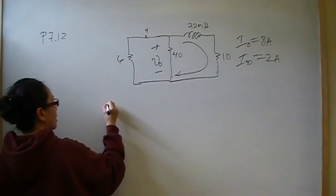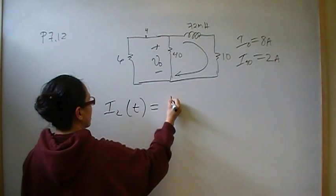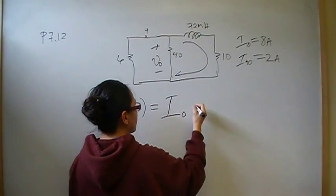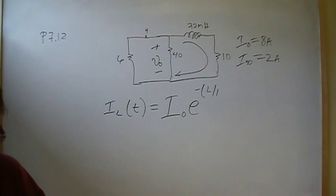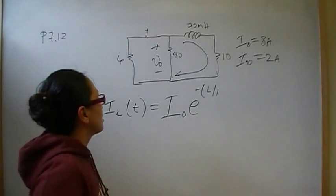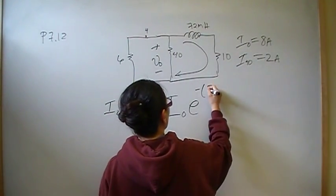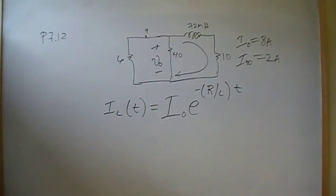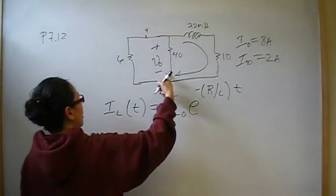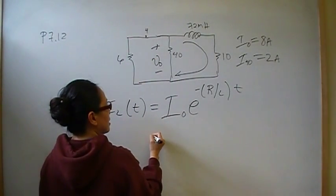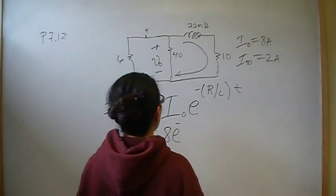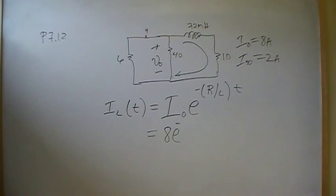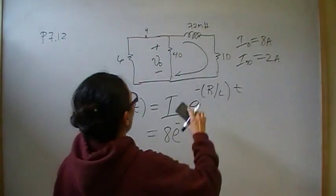So the inductor current then is I-L of T. That's going to be the initial current through the inductor times E raised to the negative R over L times T. So that's a general equation for inductor current, and we need it because we need to figure out how it splits. So we know this initial current through the inductor is 8, right? So we've got 8E to the minus R. Well, what is that R? We have a whole bunch of resistors, and the R is going to be the resistance seen by the inductor. So if we were to open this up, what would we see?